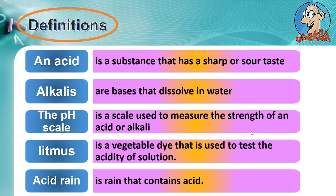The pH scale is a scale used to measure the strength of an acid or alkali. Litmus is a vegetable dye that is used to test the acidity of a solution. Acid rain is rain that contains acid.